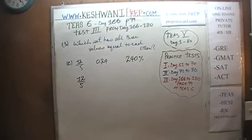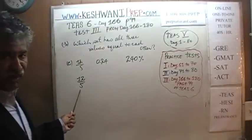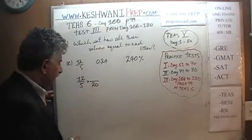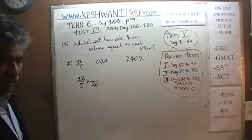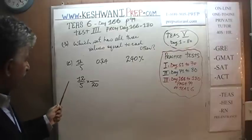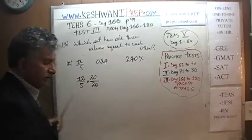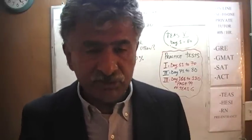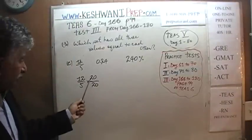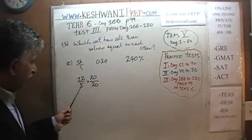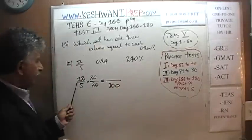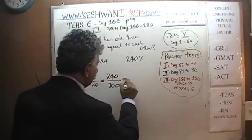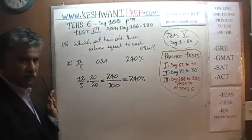How can we make that 5 into 100? If we multiply 5 by 20, we get 100. But we must also multiply the top by 20 — otherwise the value changes. Multiplying 12 over 5 by 20 over 20 is fine because 20 over 20 is just 1, so we haven't changed its value. We now have 100 at the bottom. 12 times 20 is 240, so we get 240 out of 100, which is 240 percent.